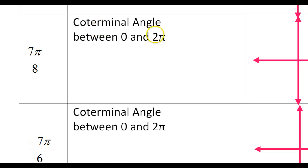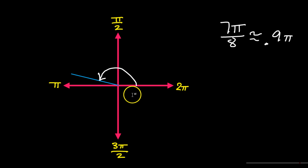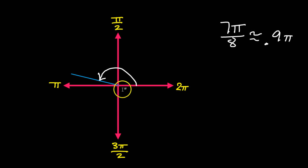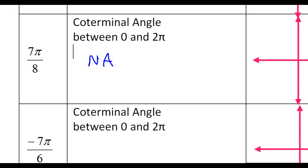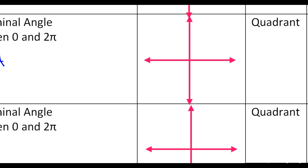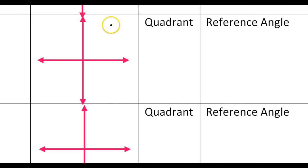As far as a coterminal angle, I don't think this applies to this problem, because between 0 and 2 pi, that's it — it's 7 pi over 8. It's already between 0 and 2 pi, it's not wrapped around, and we're not allowed to go negative, we have to stay positive. So 7 pi over 8, that's the only way to do it. The quadrant is quadrant 2.